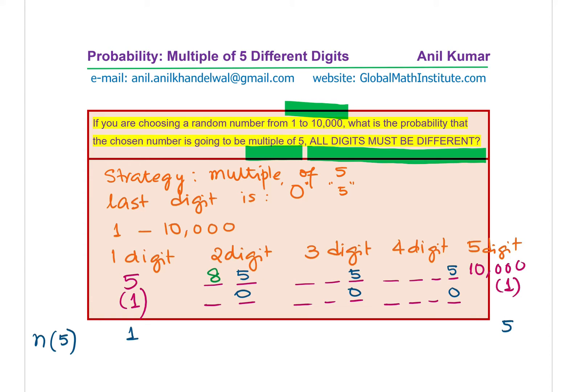But if I have zero as my last digit, I could put nine numbers, and the total of this will be eight plus nine, and that is 17. So we get 17 numbers which are two digit numbers.